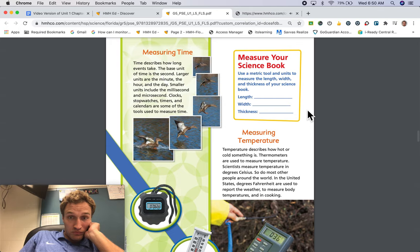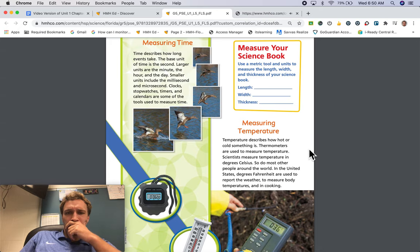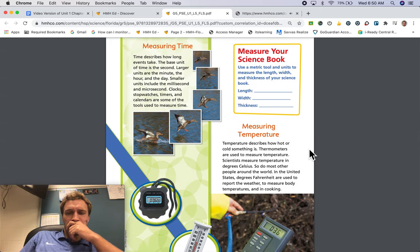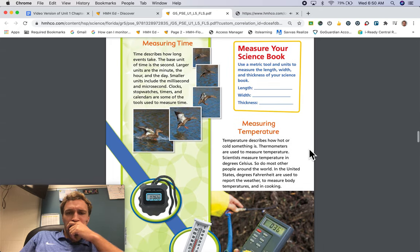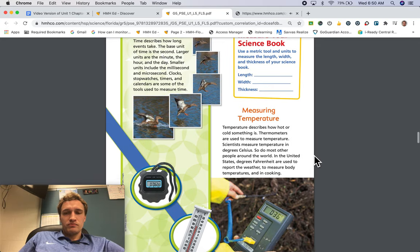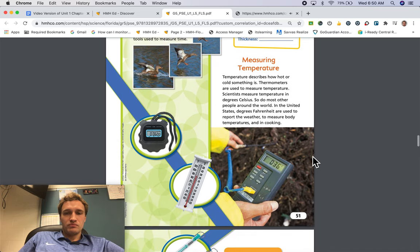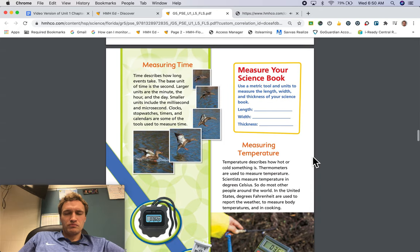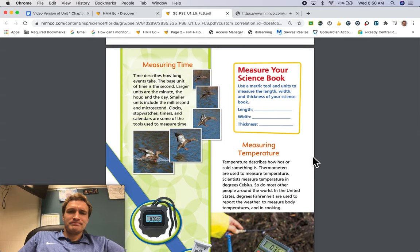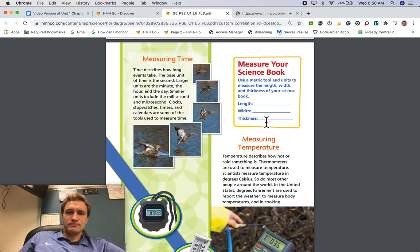Measuring temperature. Temperature describes how hot or cold something is. Thermometers are used to measure temperature. Scientists measure temperature in degrees Celsius. So do most other people around the world. In the United States, degrees Fahrenheit are used to report the weather, to measure body temperatures, and in cooking. Measure your science book. Use a metric tool and units to measure the length, width, and thickness of your science book. Length, width, thickness.